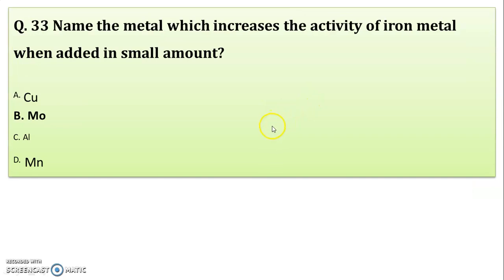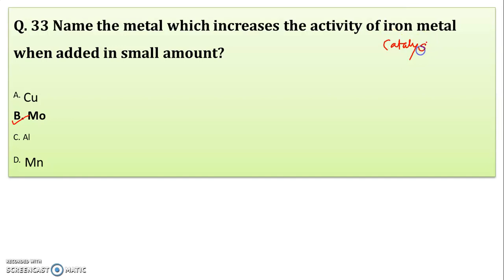Name the metal which increases the activity of iron when added in a small amount. This question is from the topic of catalysts. When you want to increase the activity of iron, a small amount of molybdenum is added. In Haber's process, iron (Fe) is used as a catalyst, and molybdenum is added as a catalytic promoter. Correct answer: Option B, molybdenum.